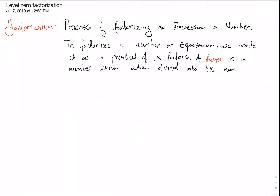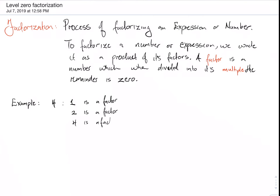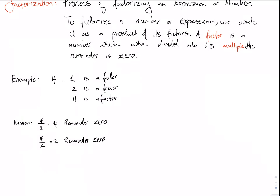A factor is a number which, when divided into its multiple, there is no remainder. For example, let's take the number four. We see clearly that one is a factor, two is a factor, and four itself is a factor. When we divide four by one, it equals four with no remainder. When we divide four by two, we get two with no remainder. When we divide four by four, we get one with remainder zero.